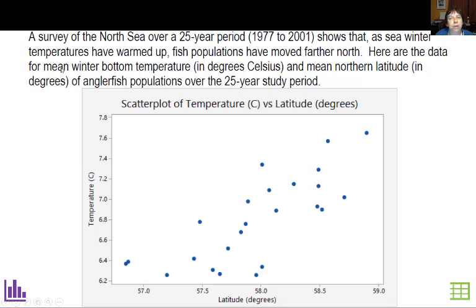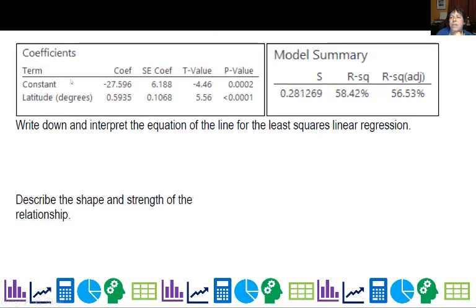Now, let's go ahead and look at one more example. I want to show you how to read computer printouts. A survey of the North Sea over a 25-year period, 1977 to 2001, shows that as sea winter temperatures have warmed up, fish populations have moved farther north. And here are the data, and it shows the latitude here and the temperature for the water. And you can see that there's sort of a linear pattern right here. And when they ran the output, this is a typical computer output that you might get. This is what they got. So how do we figure it out? Well, first of all, the constant here, you're going to see something called the constant. That's your y-intercept. And then the next number under coefficient is actually the coefficient. That's your slope.